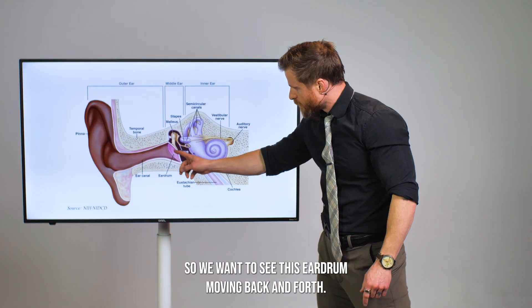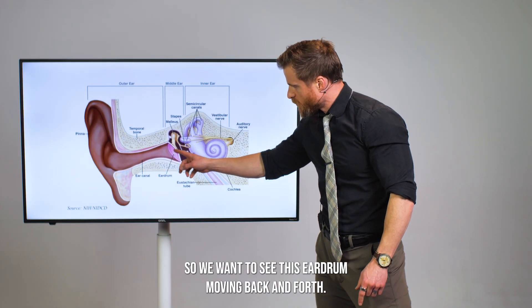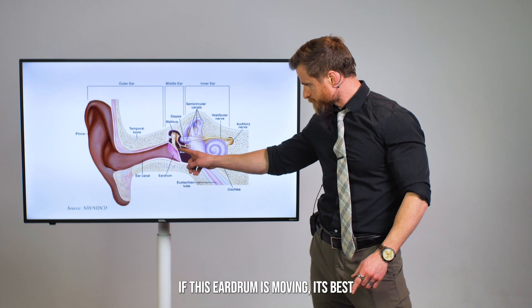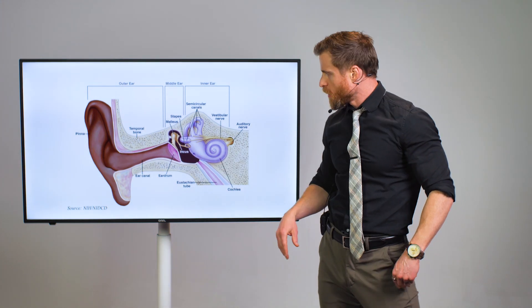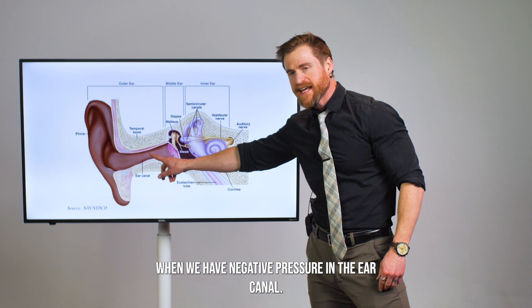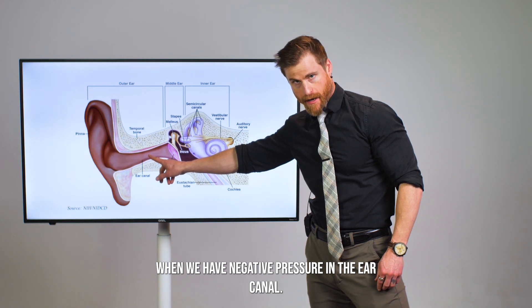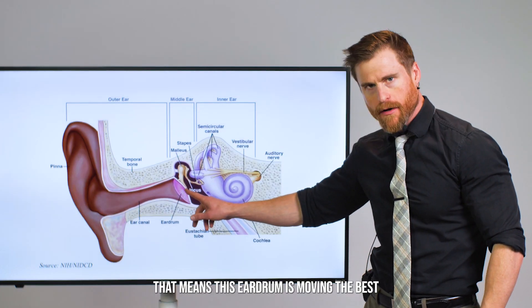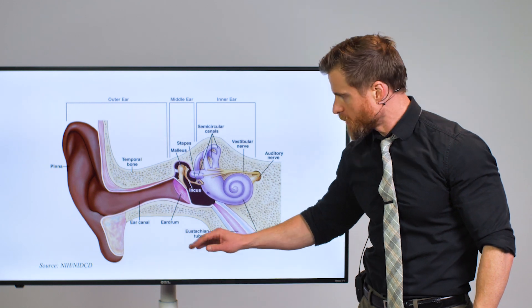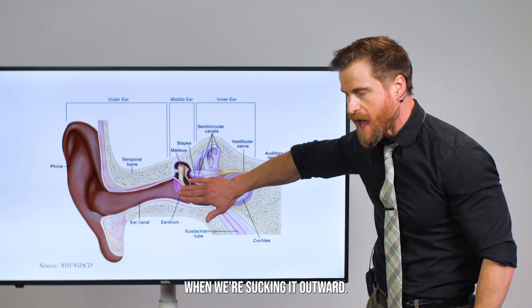We want to see this eardrum moving back and forth. If this eardrum is moving its best when we have negative pressure in the ear canal, that means this eardrum is moving the best when we're sucking it outward. That negative pressure sucks it outward.